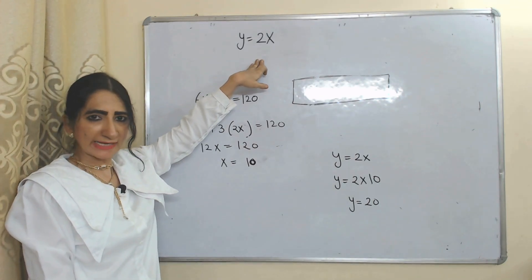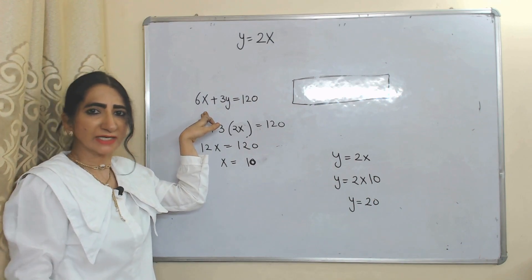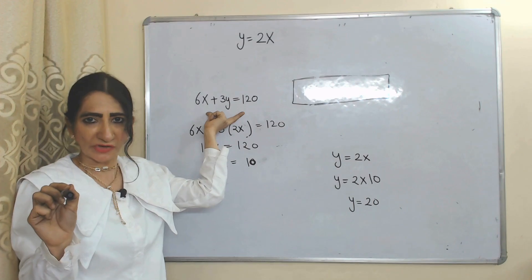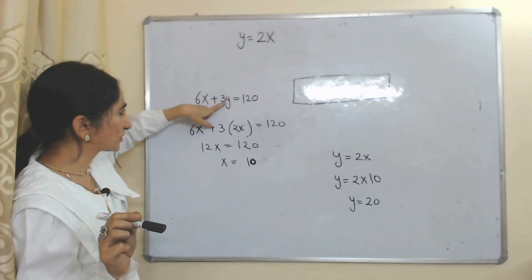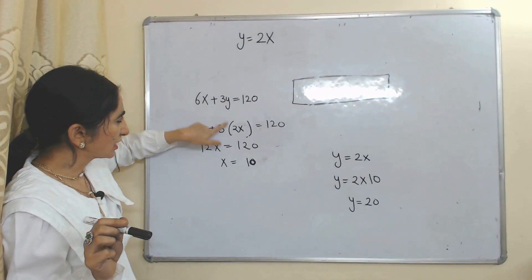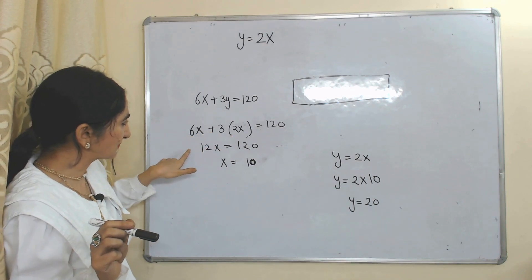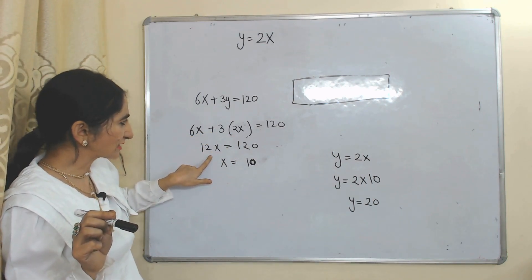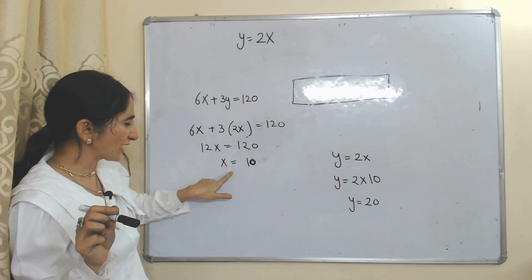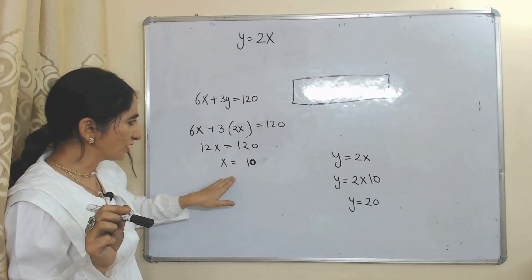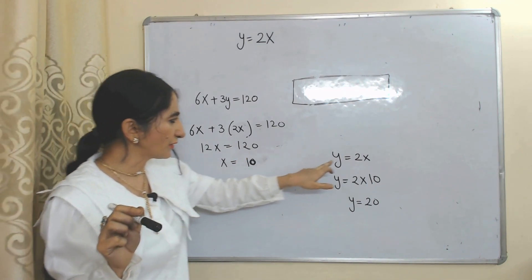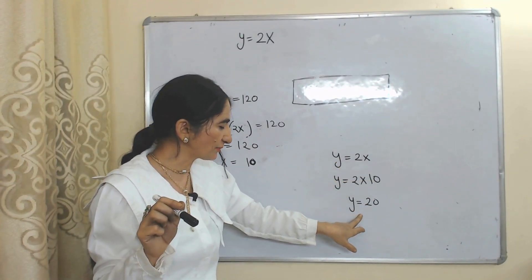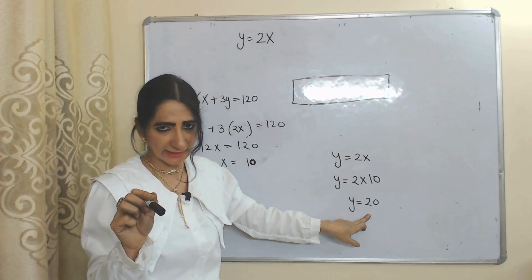Now we substitute the value of y into our budget constraint. The budget constraint equation is 120 minus 6x minus 3y equals zero. Substituting y equal to 2x: 6x plus 3 times 2x equals 6x plus 6x equals 12x, so 12x equals 120, giving x equals 10. We then substitute x equals 10 back in to find y equals 20.